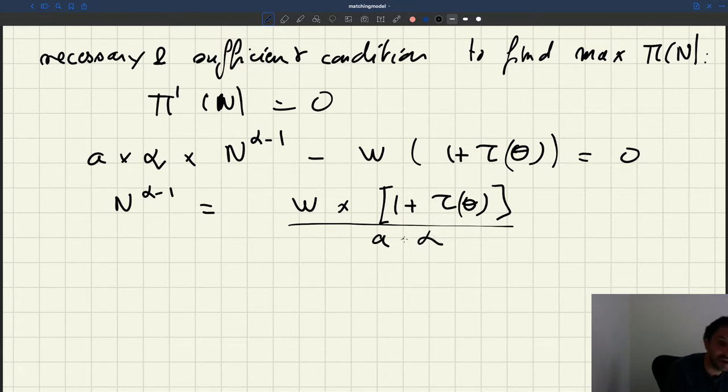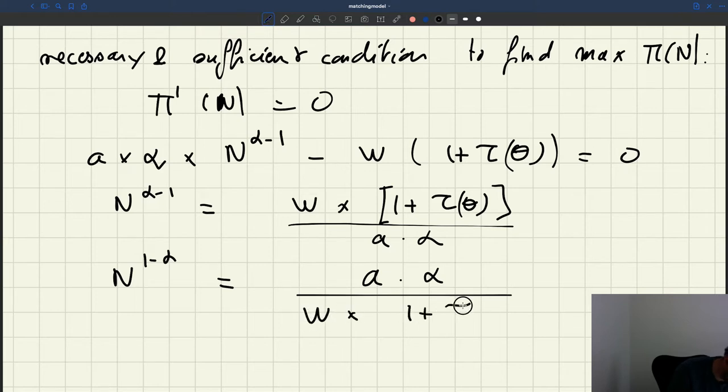Now α-1 is a negative exponent, so it's simpler to flip both sides of the equation to deal with positive exponents. So we get that n^(1-α), here I flip the left-hand side of the equation, is equal to a times α divided by w times (1 + τ(θ)).